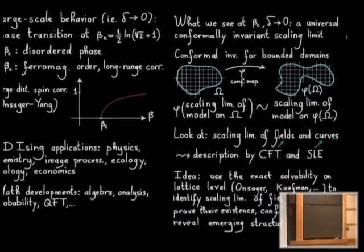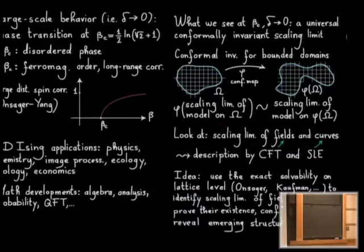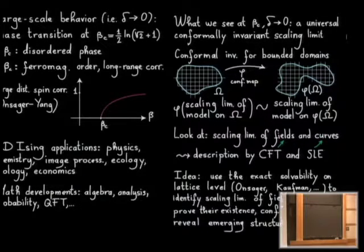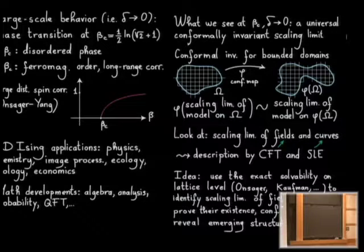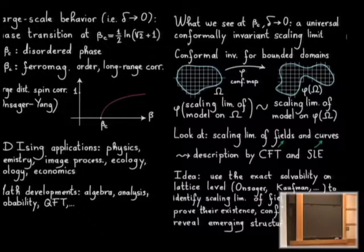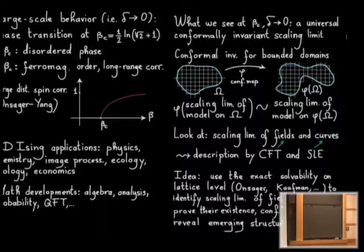At beta critical, as the mesh size goes to zero, you expect to see a universal conformally invariant scaling limit. 'Universal' means the Ising model at critical temperature is expected to converge to an object independent of irrelevant details such as the lattice on which it is defined. So you expect convergence to a continuous object that forgets about the choice of lattice. For example, the Ising model on the triangular lattice would have a different critical beta, yet its limit would be essentially the same as on the square lattice.